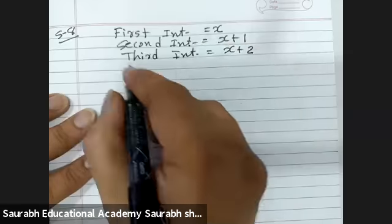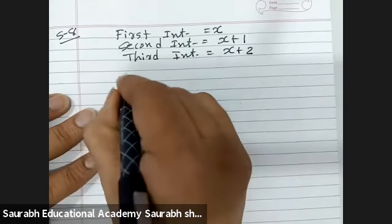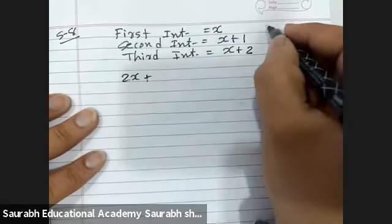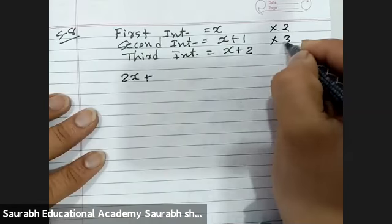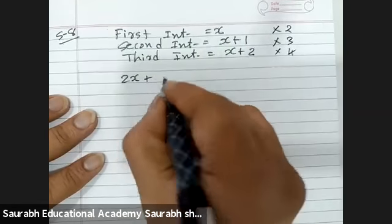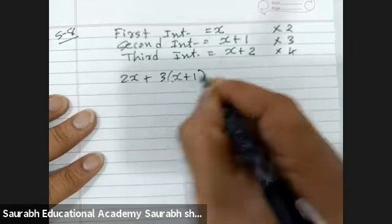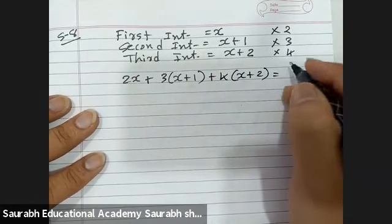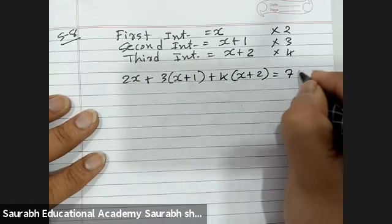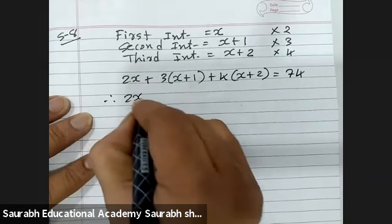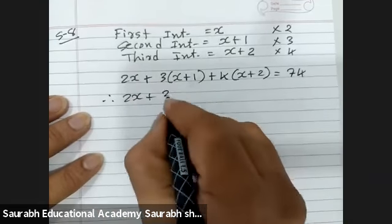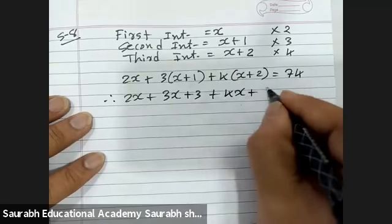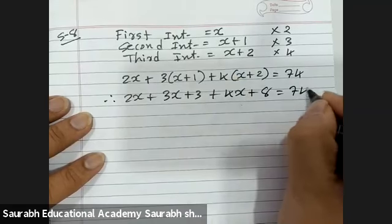The first is multiplied by 2 giving 2x, the second is multiplied by 3, and the third is multiplied by 4. So the equation is: 2x plus 3(x plus 1) plus 4(x plus 2) equals 74. Expanding: 2x plus 3x plus 3 plus 4x plus 8 equals 74.